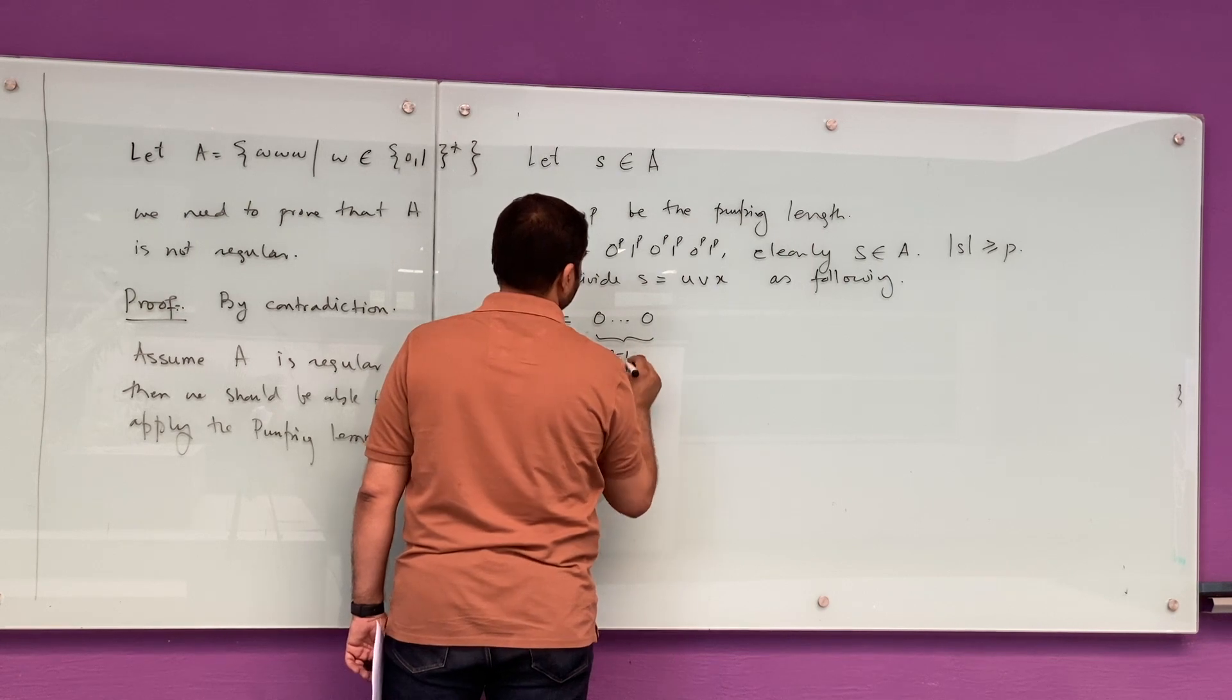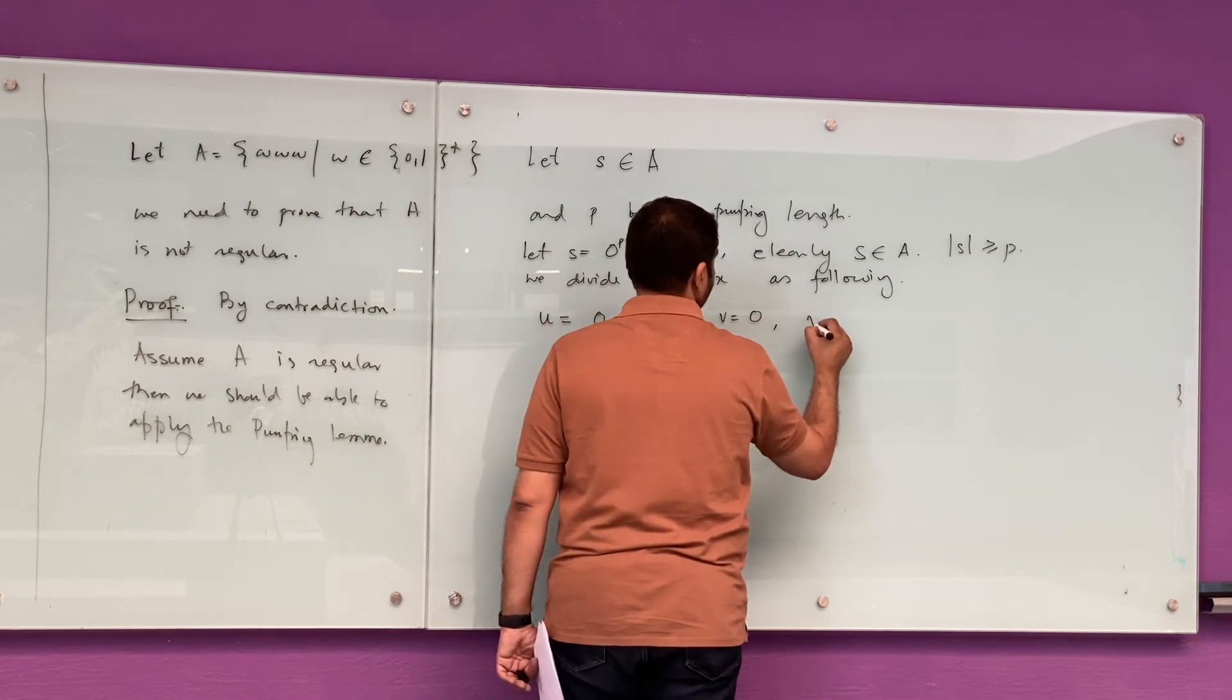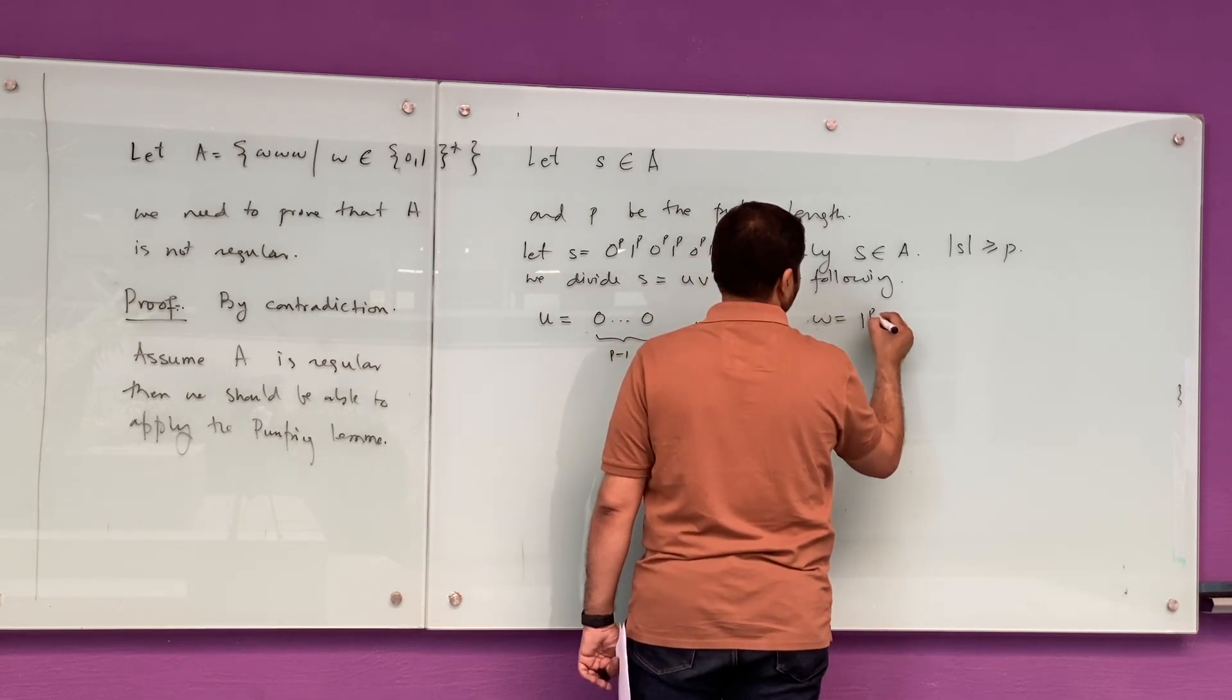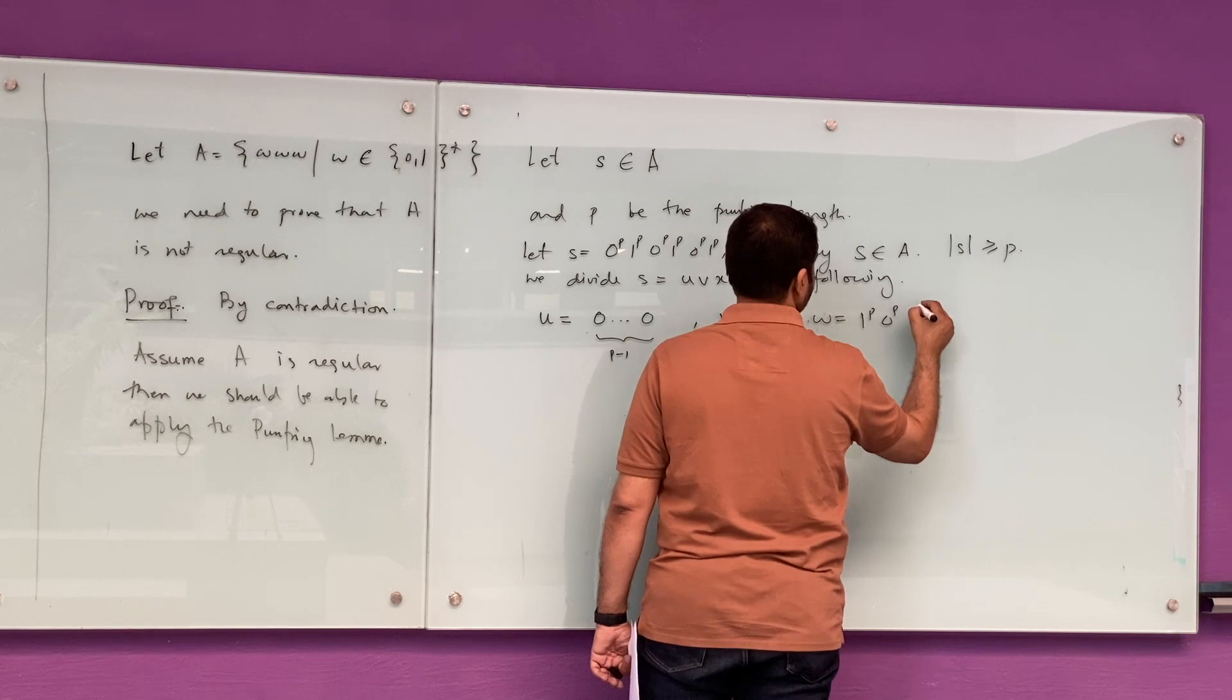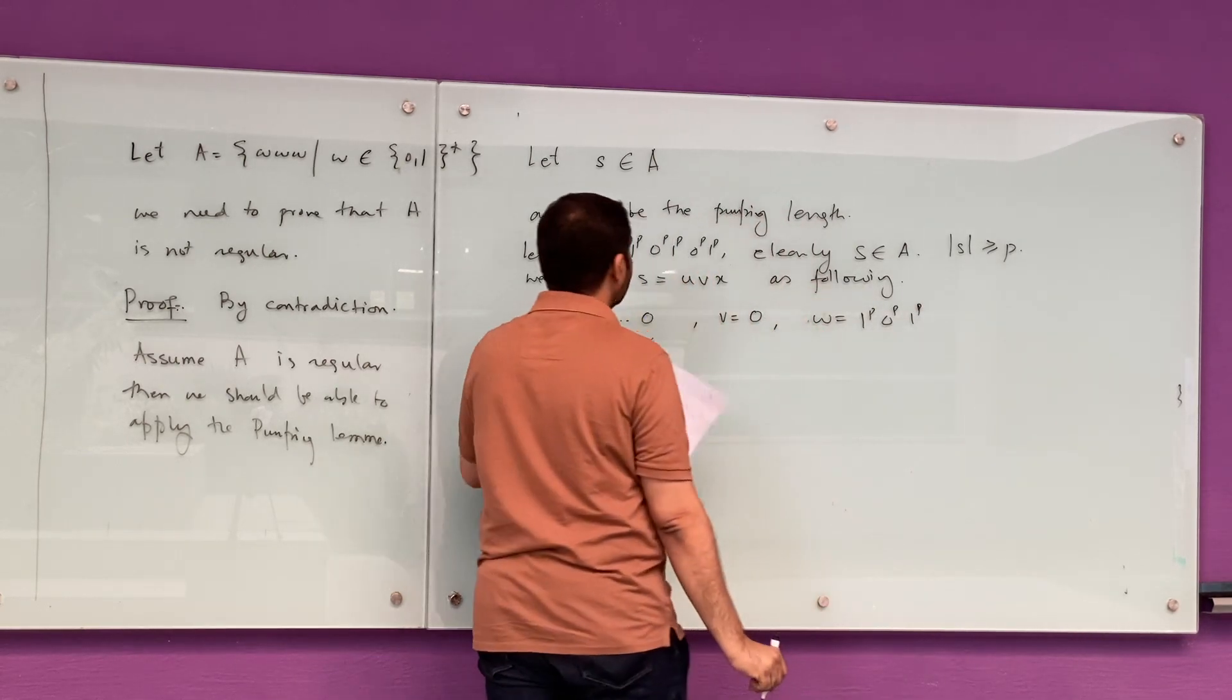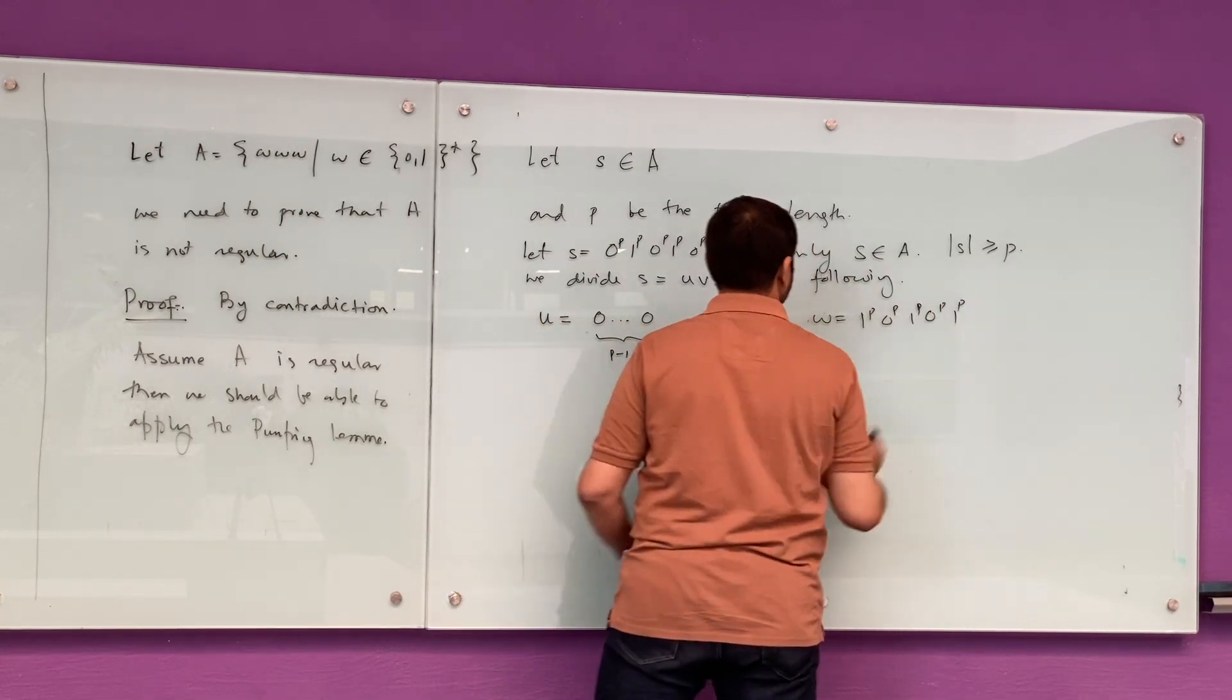Clearly we can see that this S is of at least pumping length, so we should be able to divide S into three substrings U, V, W. We divide this as U equals P-1 zeros, V equals one zero, and the rest of the string is in W.